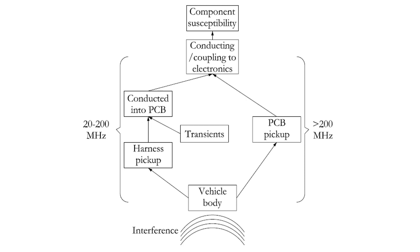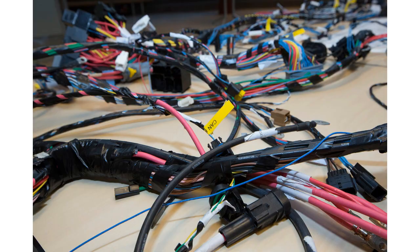Both act as antennas and convert the field into a conducted voltage or current. The second way of coupling is when the vehicle wiring harness acts as an antenna and conducts the interference into the electronic system.